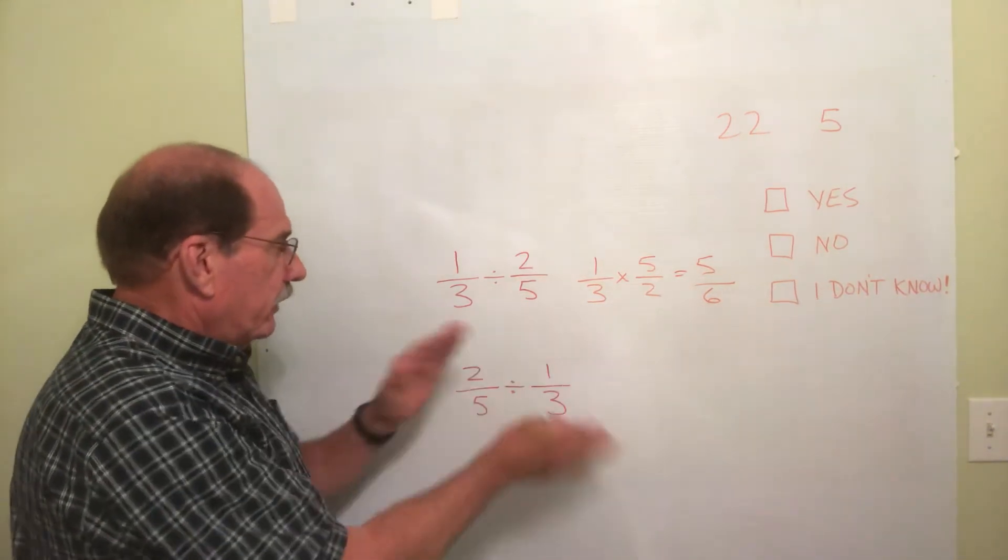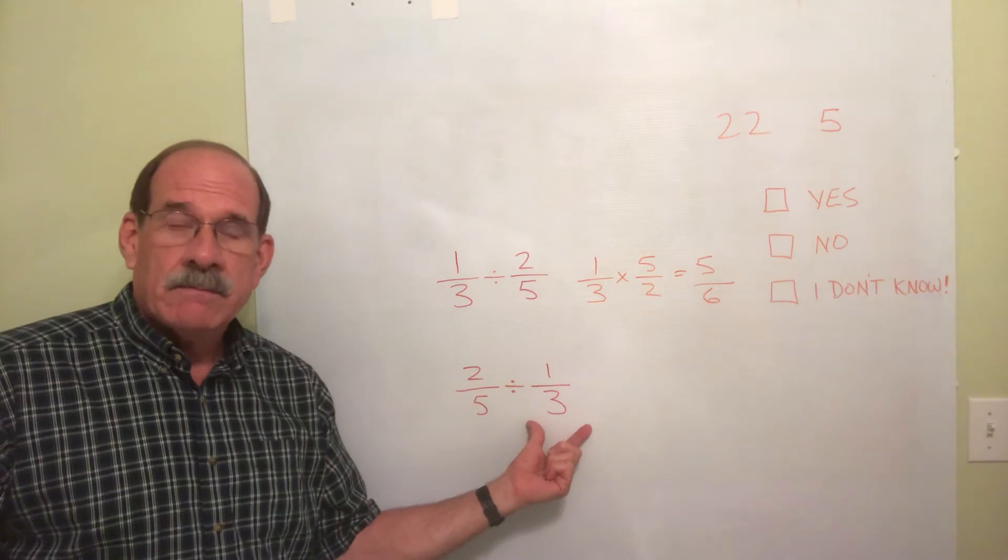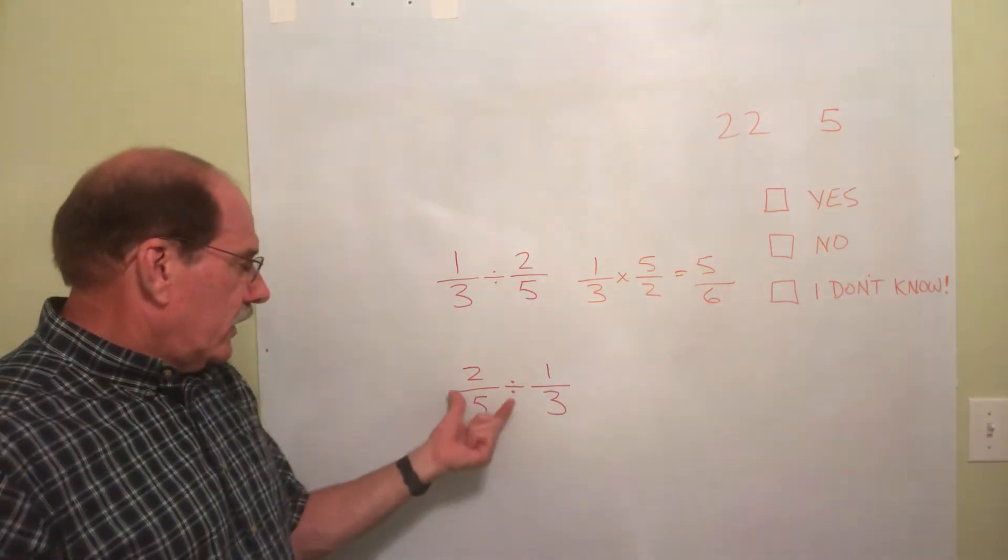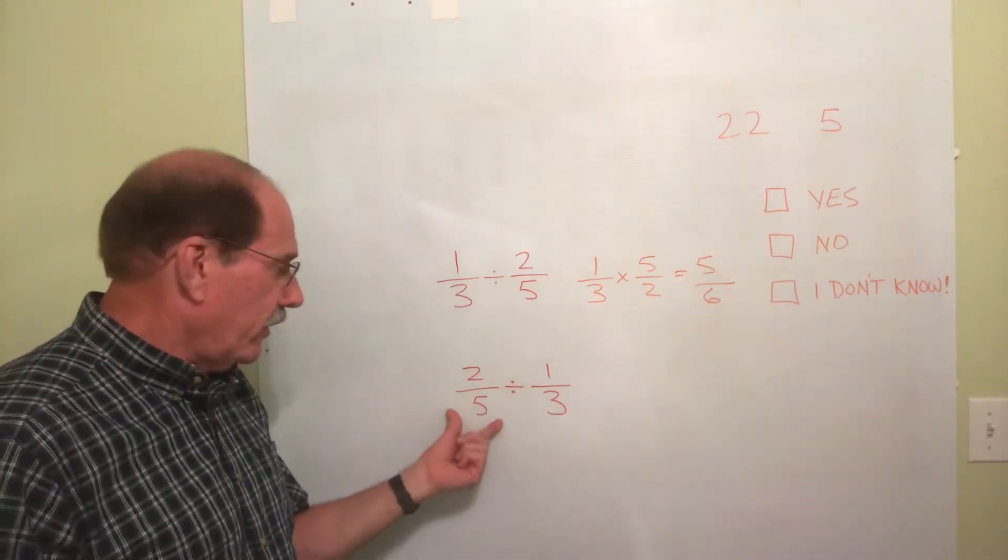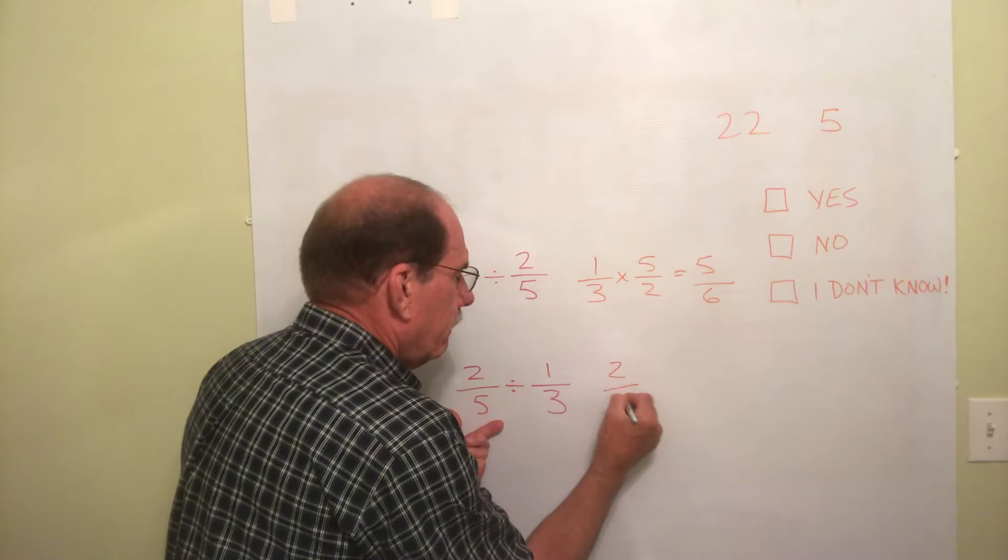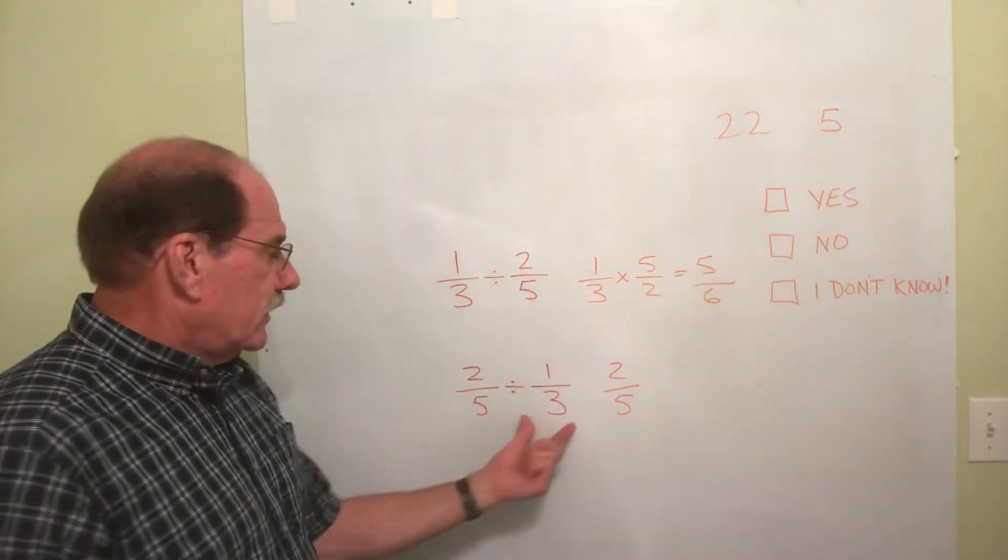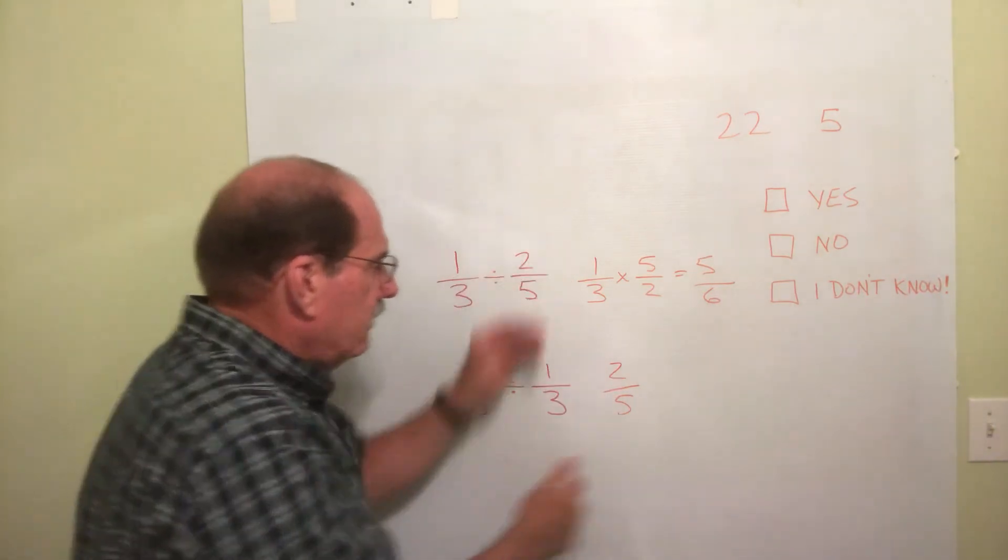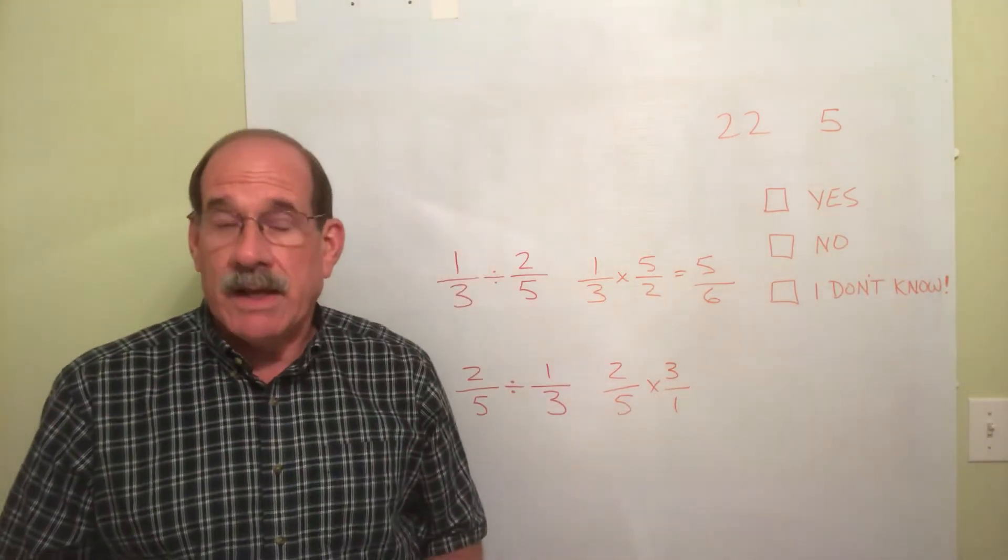What about this? It's the reverse places. But now, there's a difference. This is the first one. There's a second number. You must keep in mind the order they're in. So, 2 fifths divided by 1 third. Well, the first number, 2 fifths. Leave it alone. Don't mess with him. Second number, flip him over. So, 1 over 3 becomes 3 over 1. And I end up multiplying.